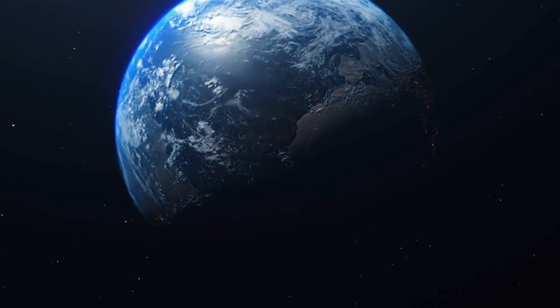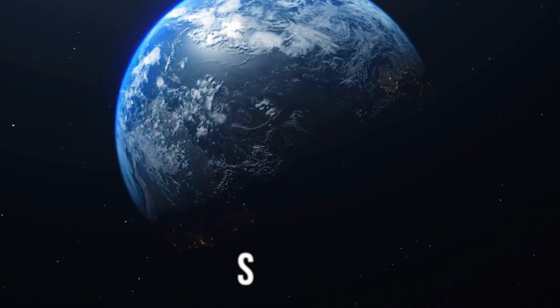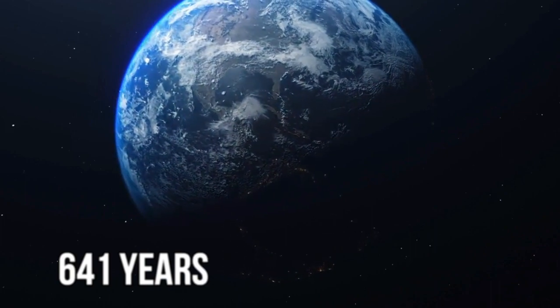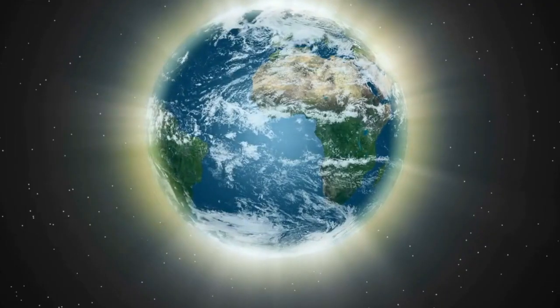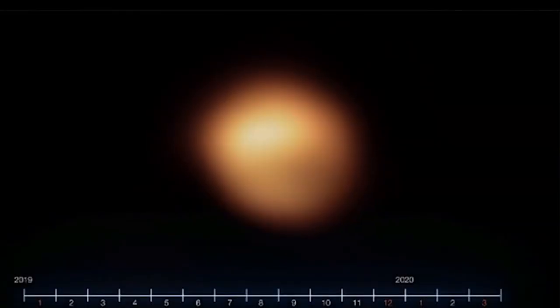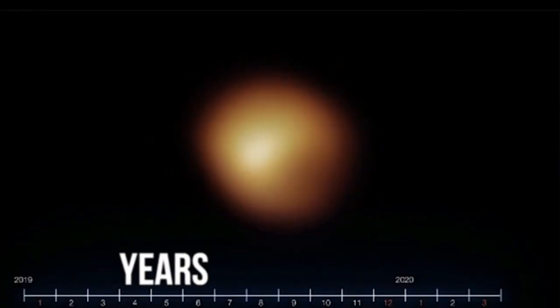Betelgeuse is located about 640 light-years away, meaning it takes the light from this star approximately 641 years to reach Earth. Therefore, if you spot Betelgeuse in the night sky, you see the star as it existed 640 years ago.